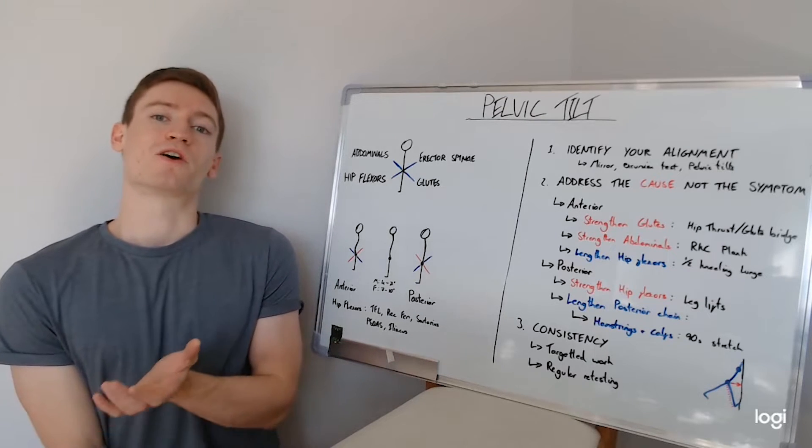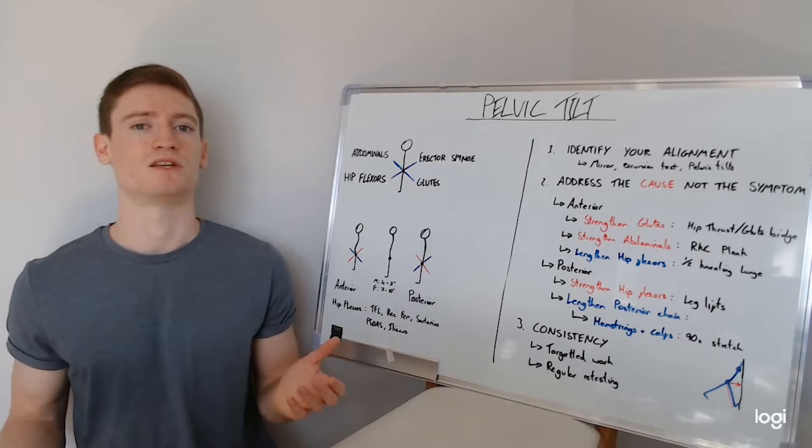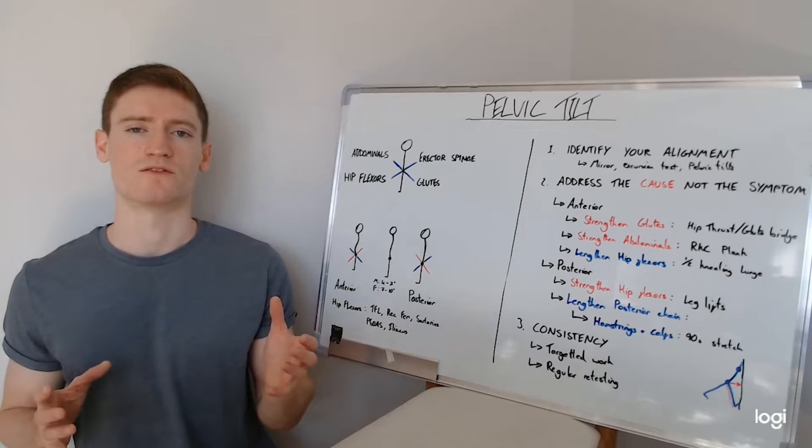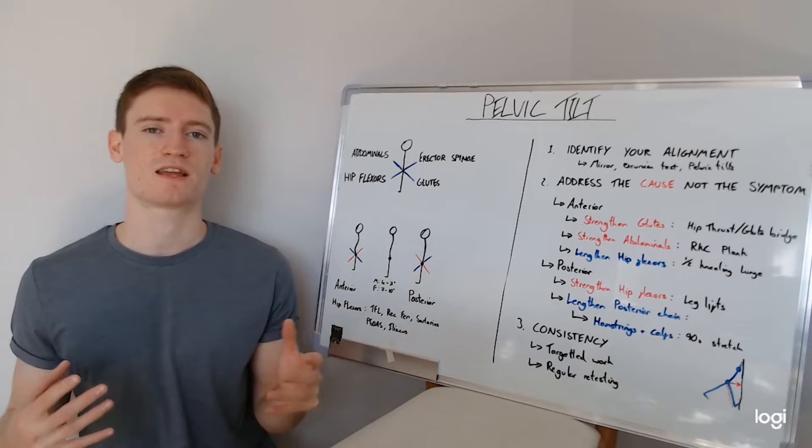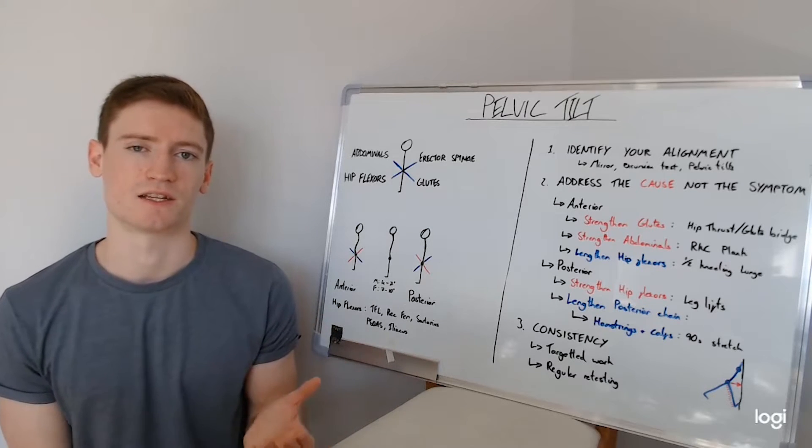So now that we've got an idea of where your pelvic alignment's at, if you're bang in the neutral zone, brilliant, that just means you need to keep your training balanced as you're going forwards to make sure that we're not offsetting anything. If you do have a degree of anterior or posterior tilt, we're just going to briefly cover what you can do to action that as well.